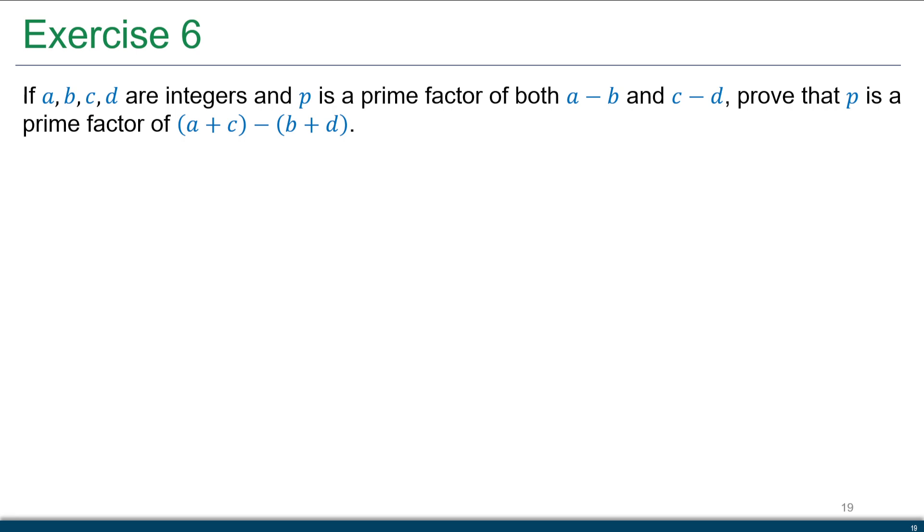Now we know, again, from the last part there, that we can take any integer N and decompose that into a product of primes as long as it's not 0 or plus or minus 1. So if I have A minus B, I can write that as a product of primes. C minus D, I can write that as a product of primes. What I'm saying, this prime P, this specific prime, if it's a factor of both, then P is also going to be a prime factor of if I take A minus B and C minus D and I add those together, I'm going to get exactly this A plus C minus B plus D. But this addition of these two things is also going to lead to having a prime factor.